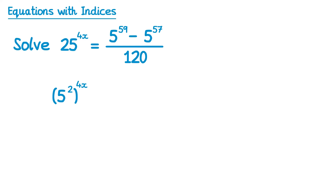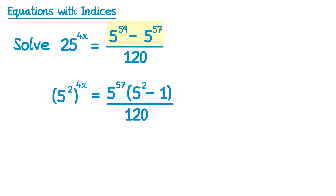On the right hand side we'll start with the top of the fraction and look at 5 to the 59 minus 5 to the 57. This is 5 multiplied by itself 59 times, take away 5 multiplied by itself 57 times, so you can actually factorise this. You can take out 57 of those 5s — so 5 to the power 57 — and then work out what goes in the bracket: to get 5 to the 59 we just need two more 5s, so 5 squared, and we already have 5 to the 57 so it's just minus 1. So we factorise the top and leave the bottom as 120.